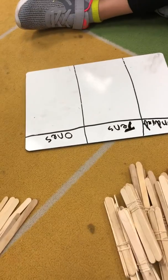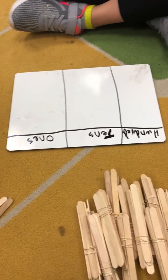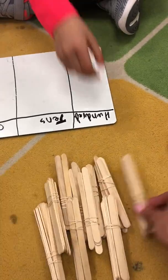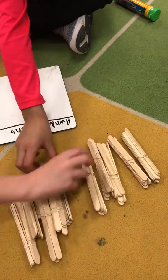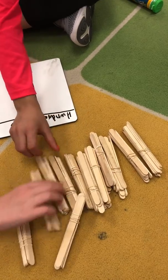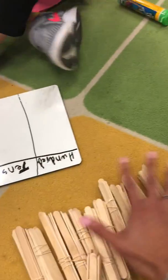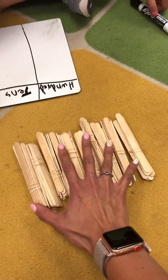So right here we have how many bundles of popsicle sticks? 120. There's 120 all together but let's count the bundles. 1, 2, 3, 4, 5, 6, 7, 8, 9, 10, 11, 12. So we have 12 bundles right here that equals how many ladies? 120.